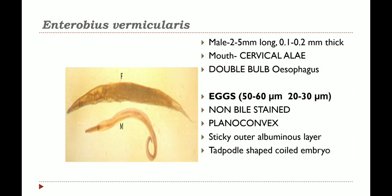The male worm measures about 2 to 5 millimeters in length and 0.1 to 0.2 millimeters in thickness. The posterior end is curved and carries a prominent copulatory spicule. The female worm is slightly larger, around 8 to 13 millimeters in length and 0.3 to 0.5 millimeters in thickness. The posterior end is thin, pointed, and pin-like. The vulva is located just in front of the middle third of the body and opens into a single vagina leading to paired uterus, oviducts, and ovaries.